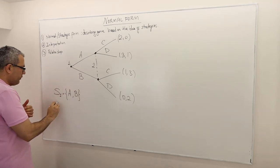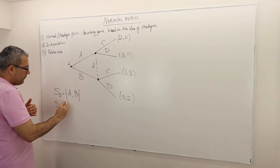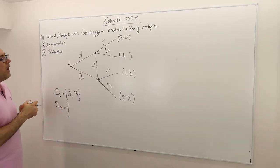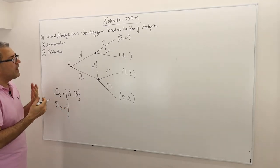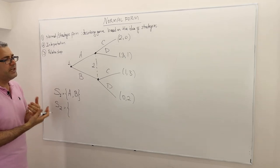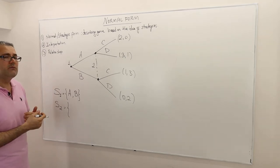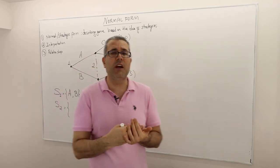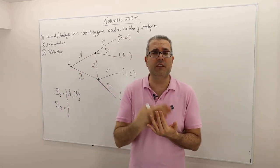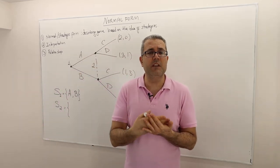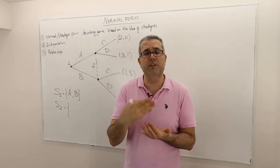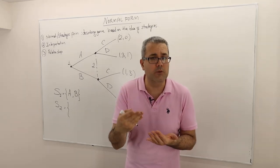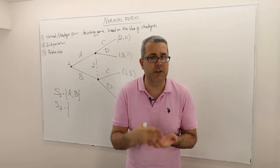What about player two? Player two has — how many strategies does he have? Remember the definition of strategy: a strategy is a contingency plan. It basically tells us how the player is going to move at every decision node or at every information set.